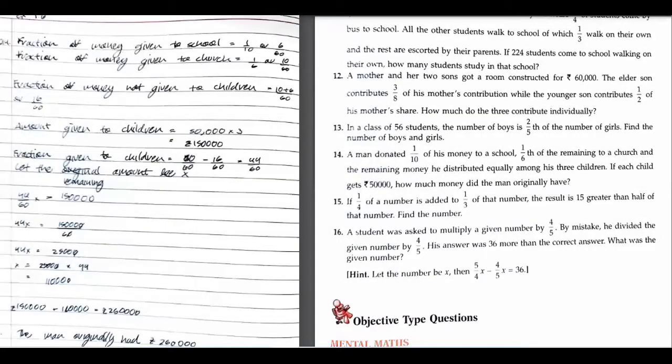Can you read question number 14? Yes. A man donated one-tenth of his money to a school, one-sixth of the remaining to a church, and the remaining money he distributed equally to his children. If each child gets 50,000 rupees, how much did the man originally have?